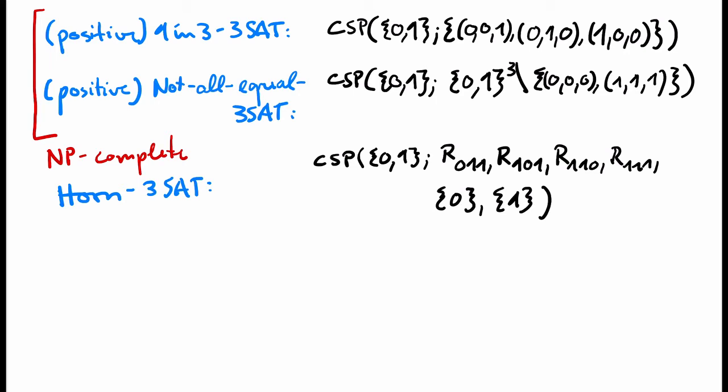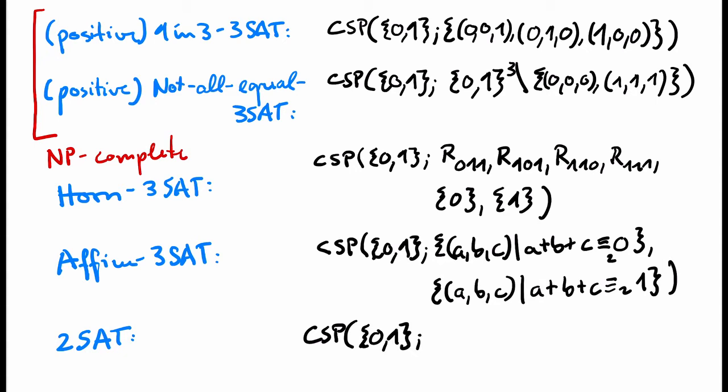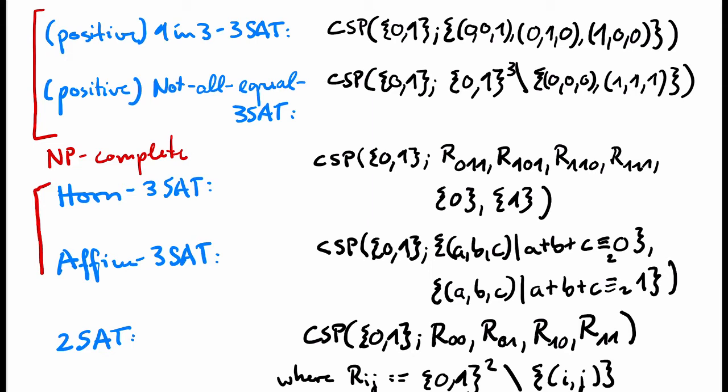Affine 3-SAT has two ternary relations, one that can be used to force that three variables add up to 0 modulo 2, and one to force that three variables add up to 1 modulo 2. Finally, 2-SAT is the problem where we have binary constraints. So we can express the constraint A or B, the constraint not A or not B, and the constraint A implies B. All of these three problems can be solved in polynomial time. This will be an immediate consequence of Schaefer's theorem.